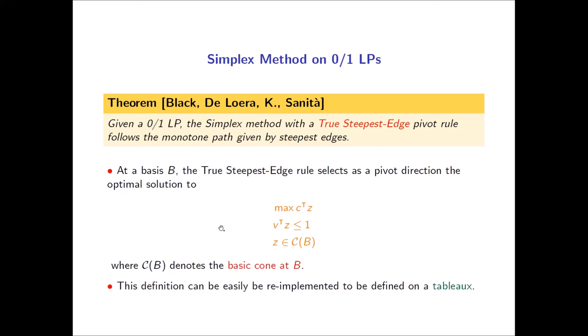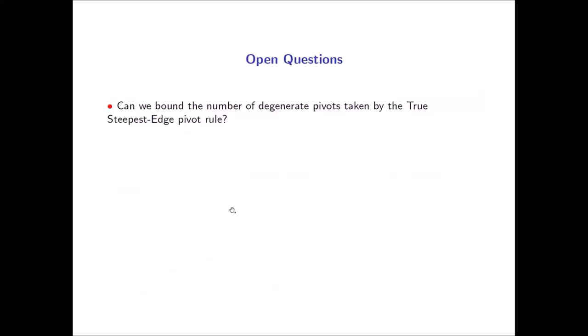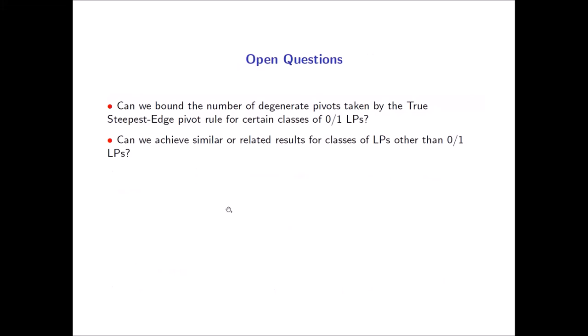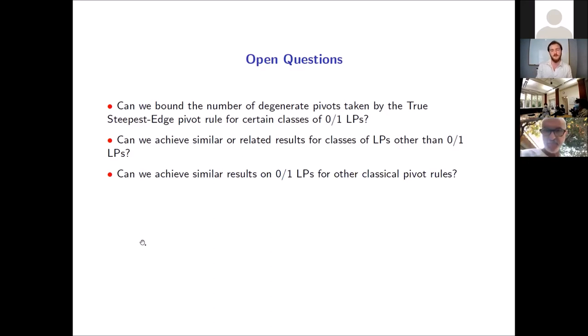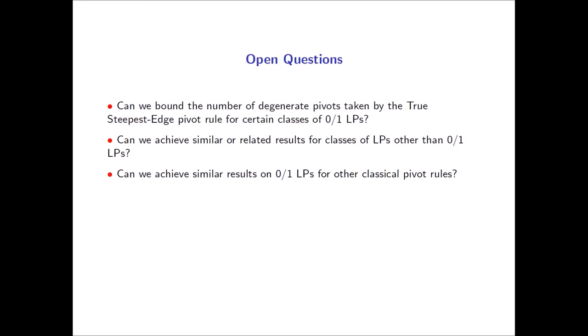This leaves several open questions. Can we bound the number of degenerate pivots taken by this pivot rule, perhaps for certain subclasses of zero-one LPs? Can we achieve similar results for classes of LPs other than zero-one — an obvious candidate being lattice polytopes, though our precise techniques don't automatically translate there? And can we achieve similar results on zero-one LPs inspired by other classical pivot rules, such as the shadow vertex pivot rule? Thank you — that's all.